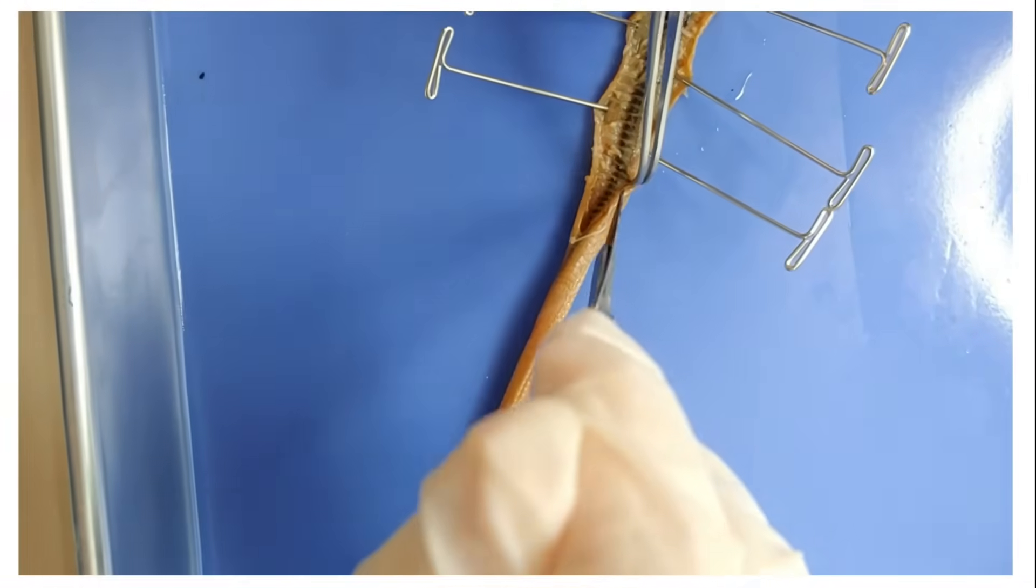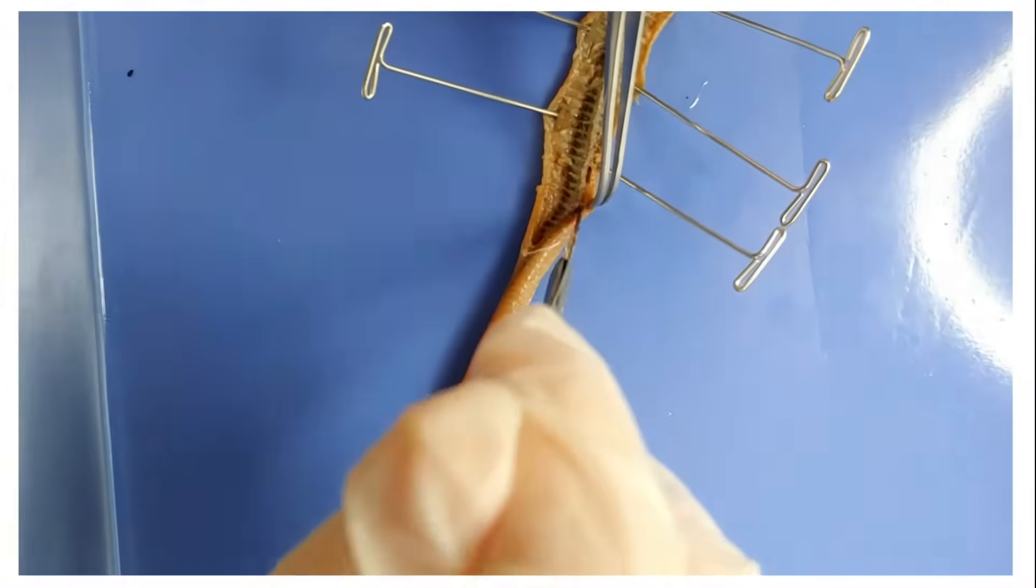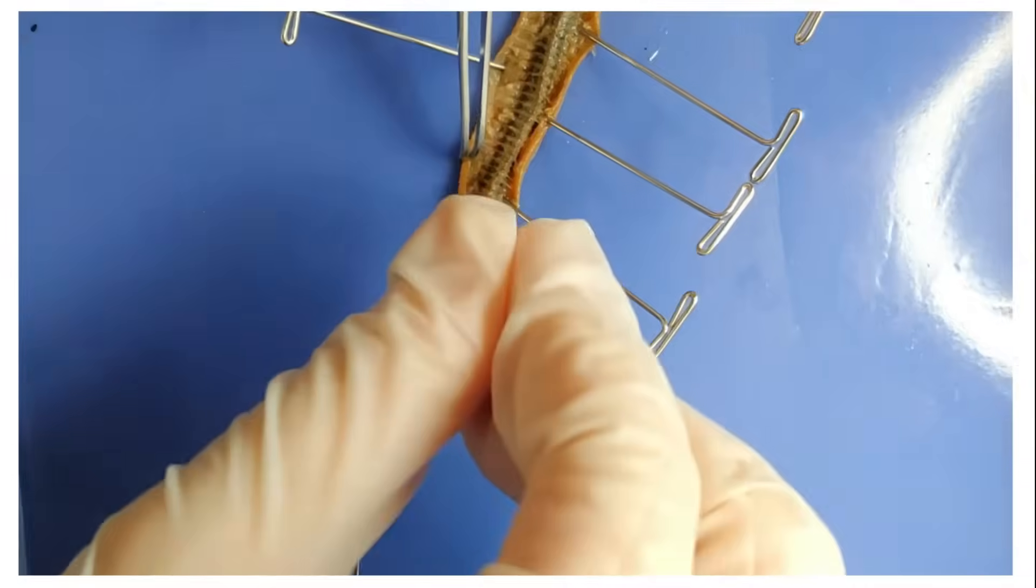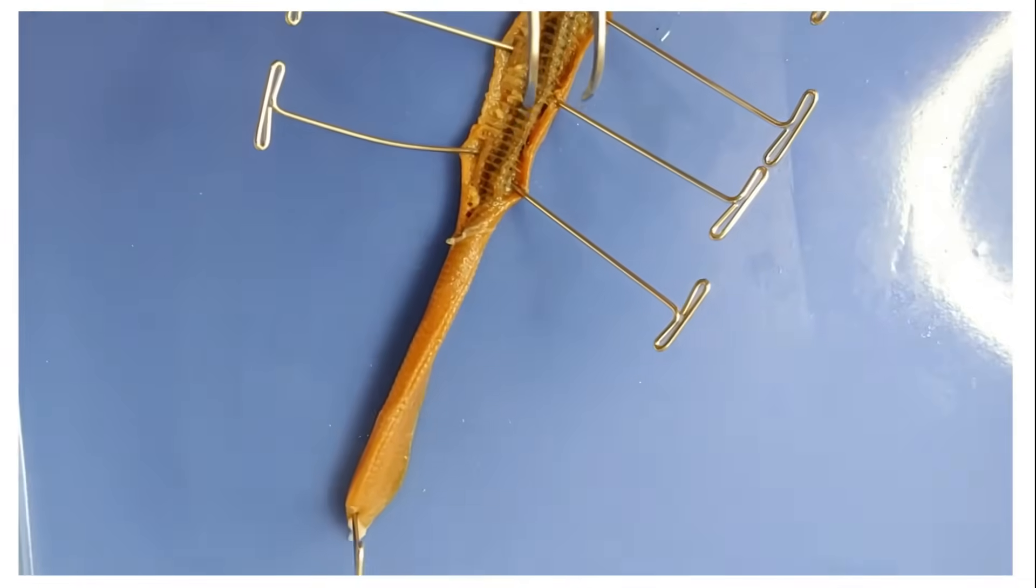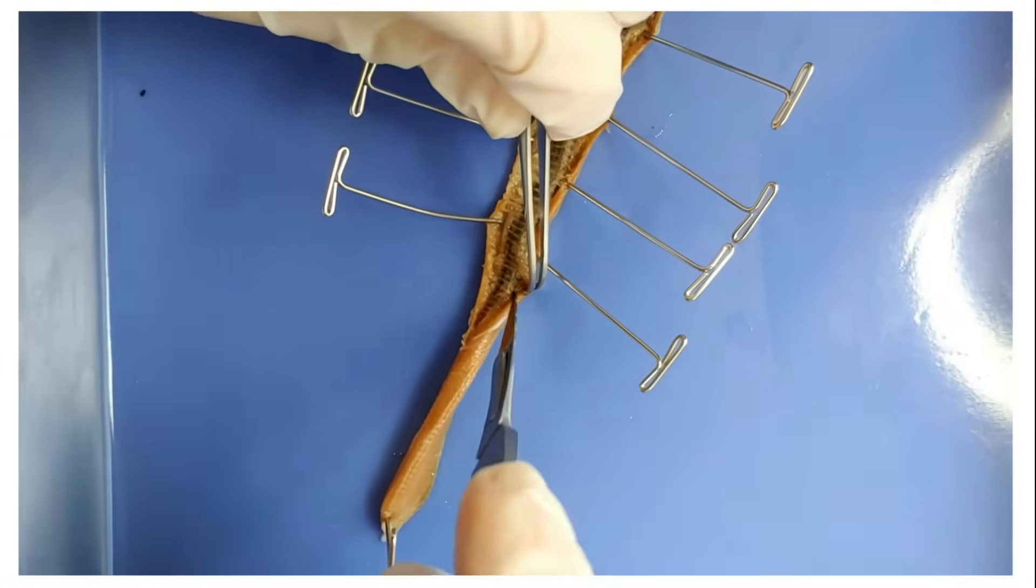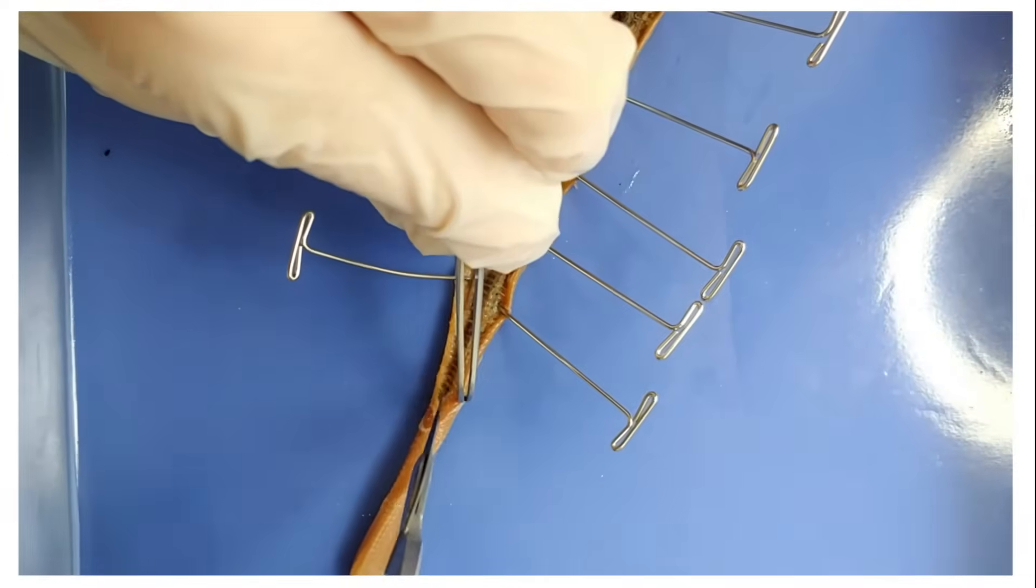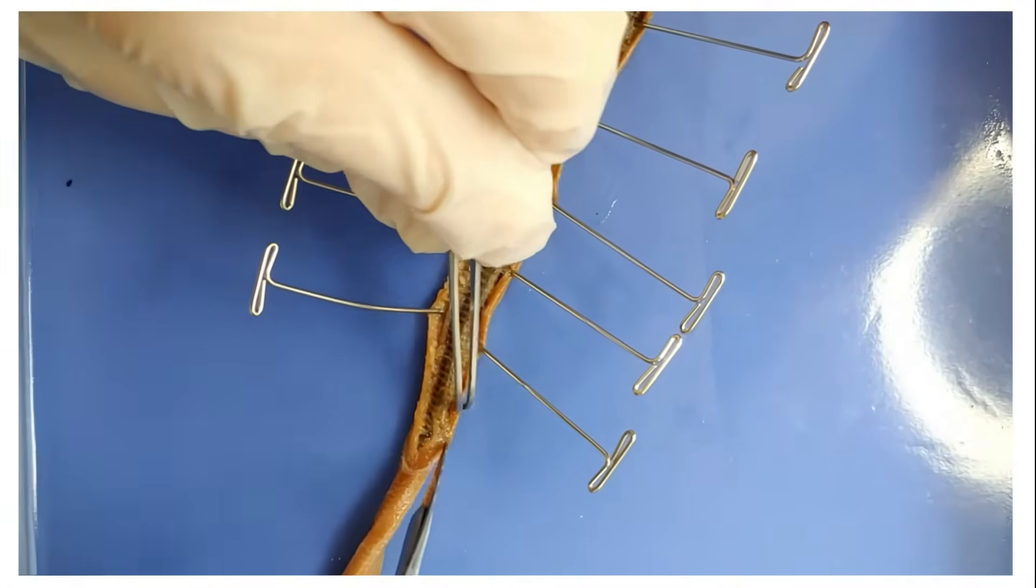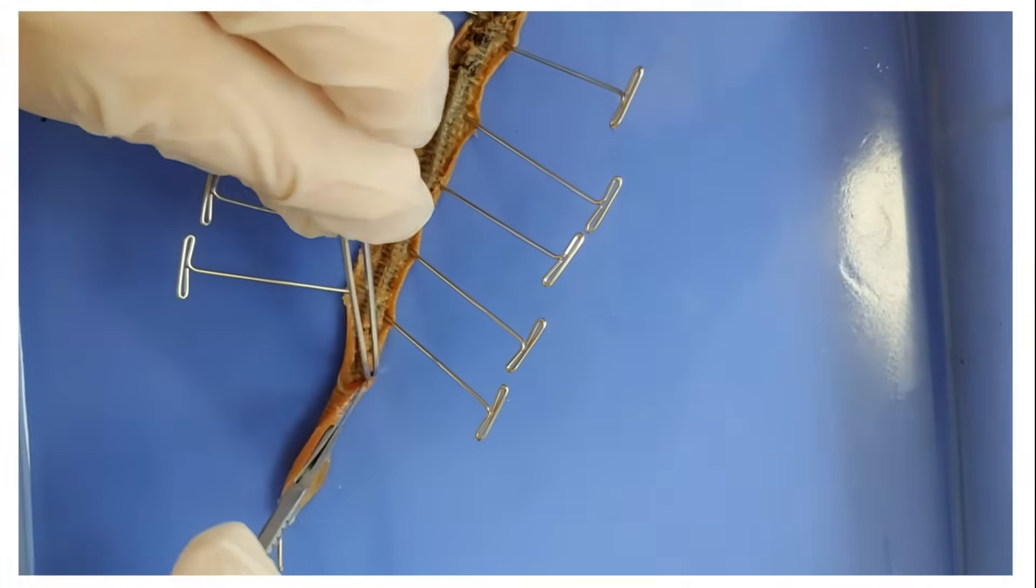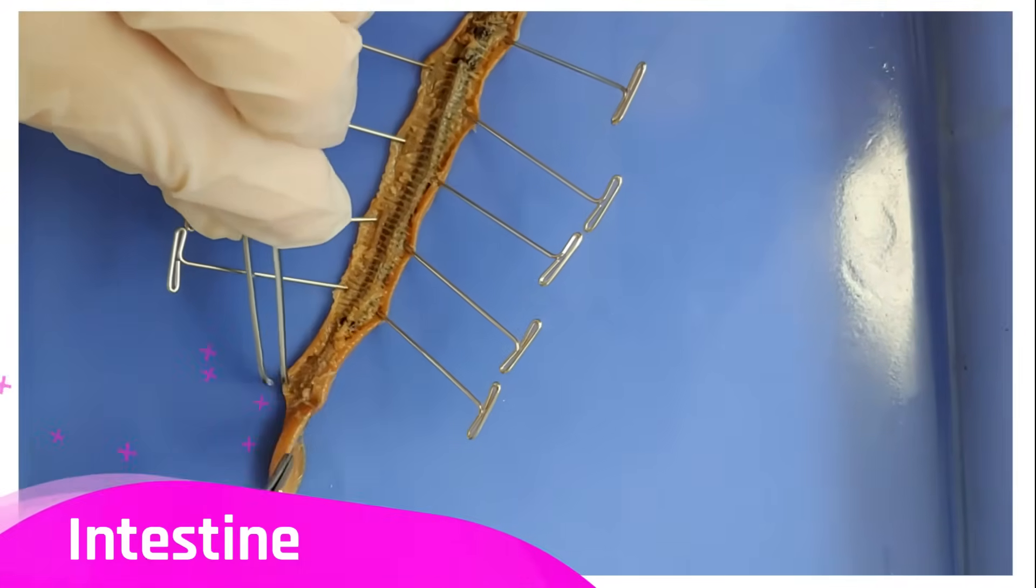A worm is an interesting animal to dissect because it's basically a tube within a tube. This can teach us a lot because you are also a tube within a tube. You have your digestive tract which is your inner tube and everything else around it which is the outer tube. Now what I have revealed so far is the worm's intestine.